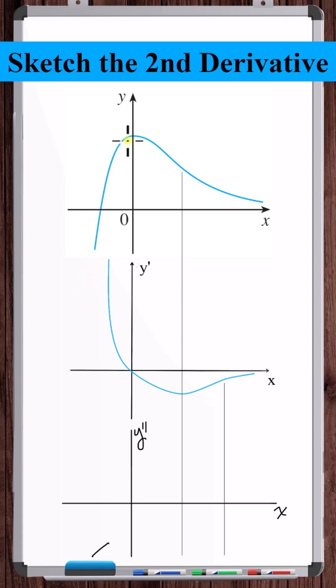The concavity of the function graph gets less and less negative until at this point it switches to positive. The slope of the y prime graph does the same thing.